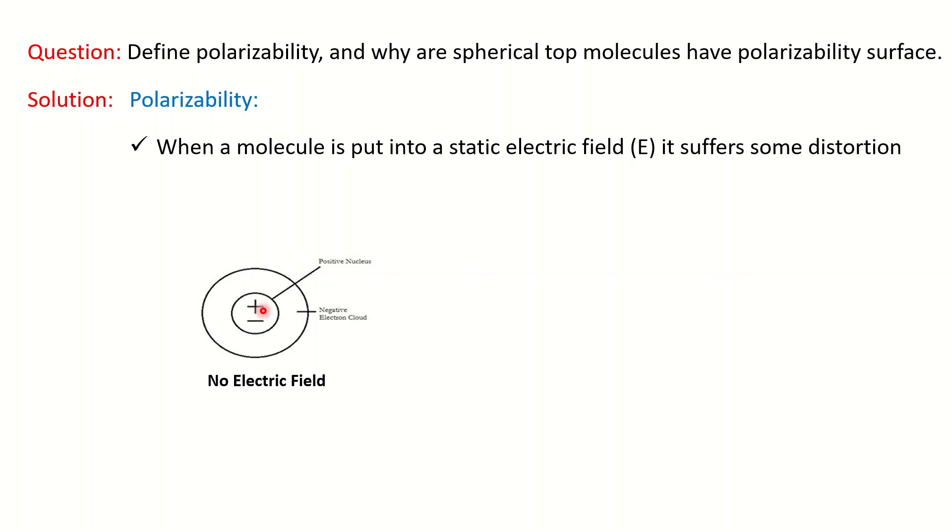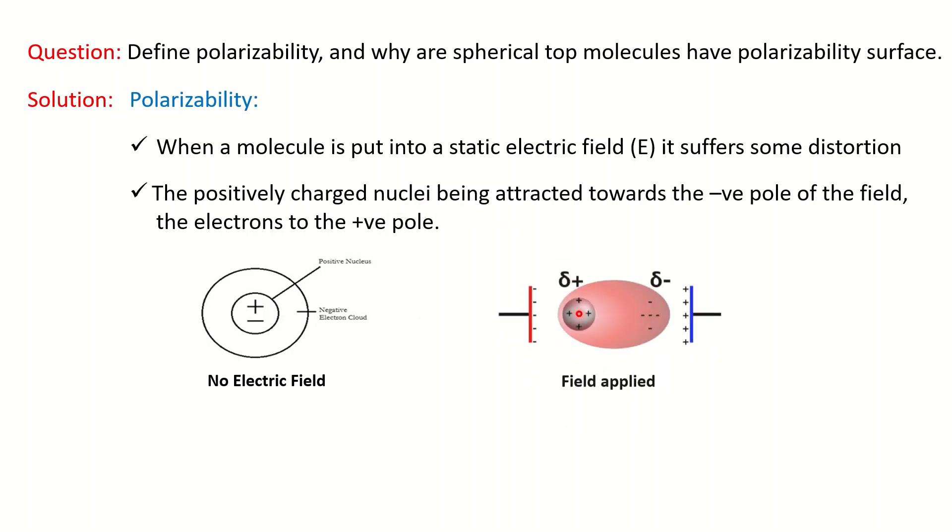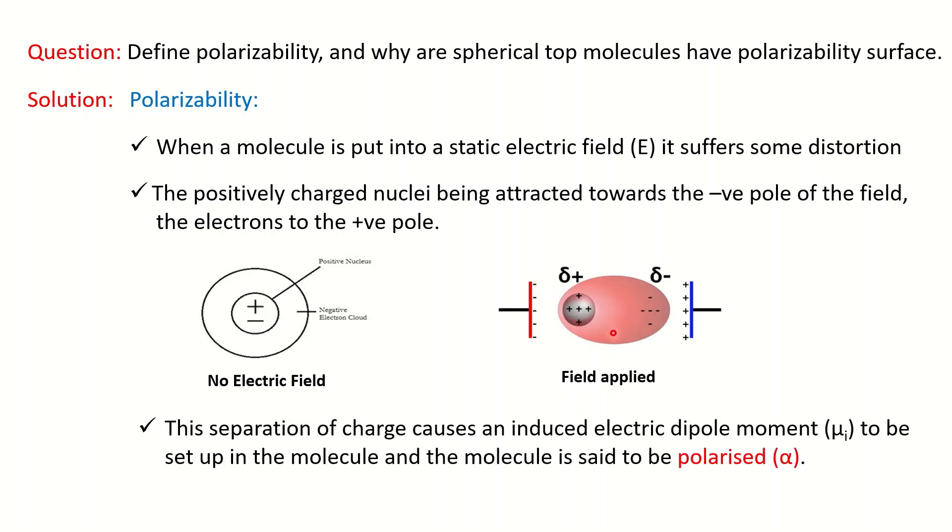When you put this molecule into a static electric field, some distortion occurs. What type of distortion? The positively charged nuclei are attracted towards the negative pole while the electrons are attracted towards the positive pole. This distortion happens when you apply the field. In the absence of the electric field, the nucleus looks like this, and after applying the electric field, you can see the shape has changed.